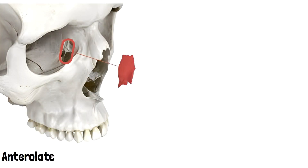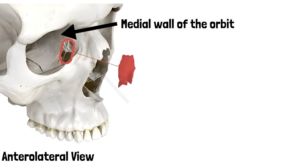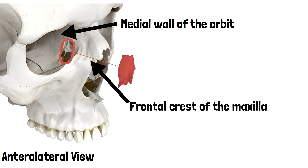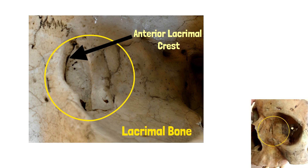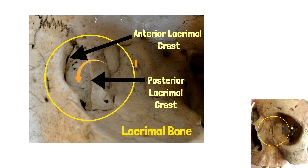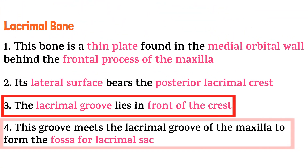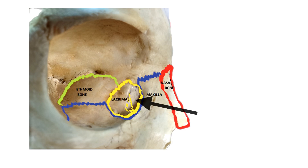This is the anterolateral view of the skull showing the medial wall of the orbit. This thin plate of bone is the lacrimal bone. In the magnified image, the bone encircled in yellow is the lacrimal bone. Here we can see the anterior lacrimal crest and the posterior lacrimal crest. The orange arrow depicts the lacrimal groove, which meets the lacrimal groove of the maxilla to form the fossa for the lacrimal sac.